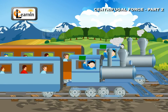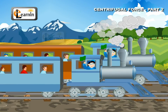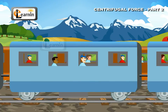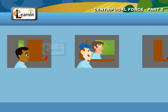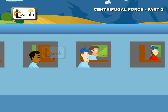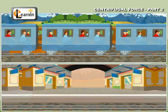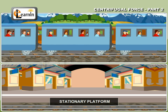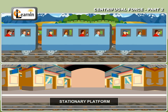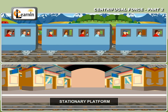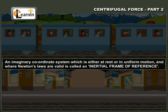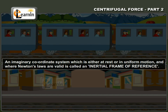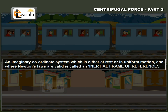Now, consider two trains moving with the same uniform velocity adjacent to each other. An observer sitting on one of the trains will not be able to detect the motion of the other train, so an imaginary coordinate system attached to one of the trains will behave identically to the one attached to the stationary platform. Newton's laws can be safely applied even in such a frame of reference with uniform motion. An imaginary coordinate system which is either at rest or in uniform motion and where Newton's laws are valid is called an inertial frame of reference.